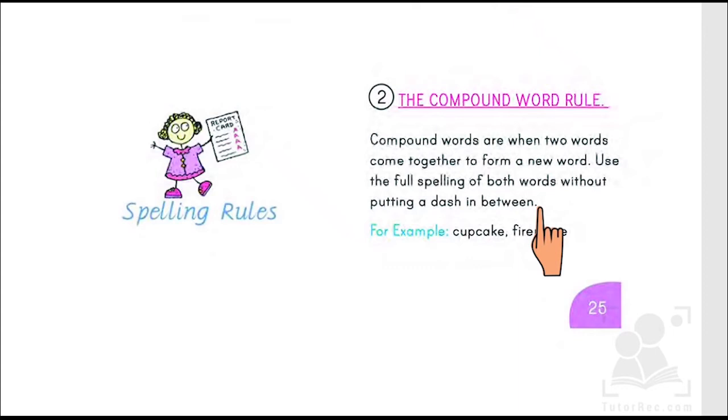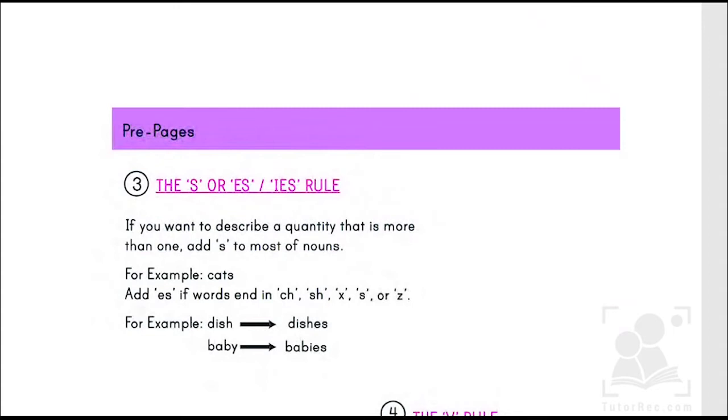Let's move to the next page and look at rule number 3. Rule number 3 says the S or ES or IES rules. This spelling rule is really basic but at the same time it is also important because it is used in the present tenses.